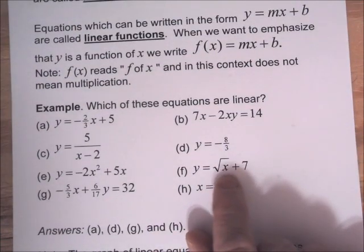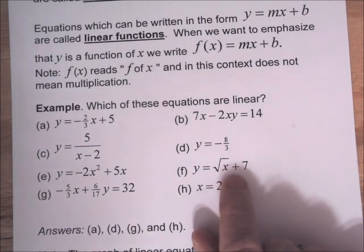F is not linear. The linear forms do not have a square root in them. It could have a square root of a number, but not square root of a variable.